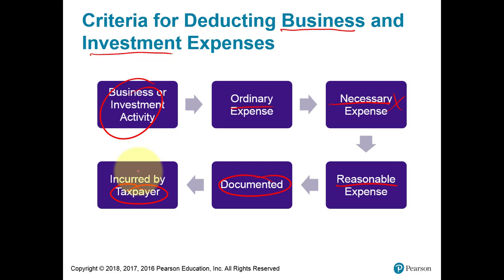Conversely, let's say you pay my mortgage — can you deduct it? I'm on the mortgage, I'm liable for it, you're not. You can't deduct it. So again, it has to be the taxpayer's obligation, and the taxpayer has to be the one who pays it.